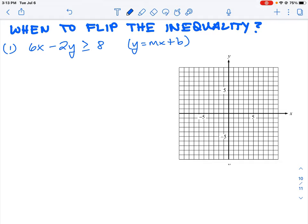The first thing we should do is move the 6x over to the other side, so we do that by subtracting 6x on both sides. That's going to leave our equation as negative 2y greater than or equal to negative 6x plus 8.